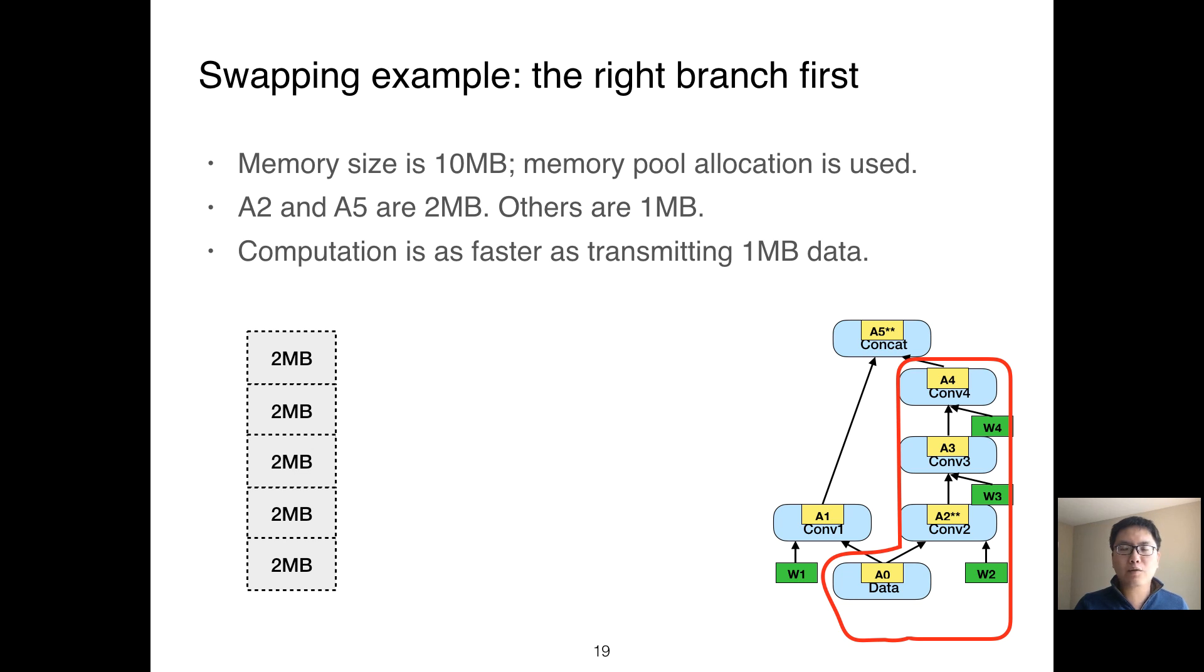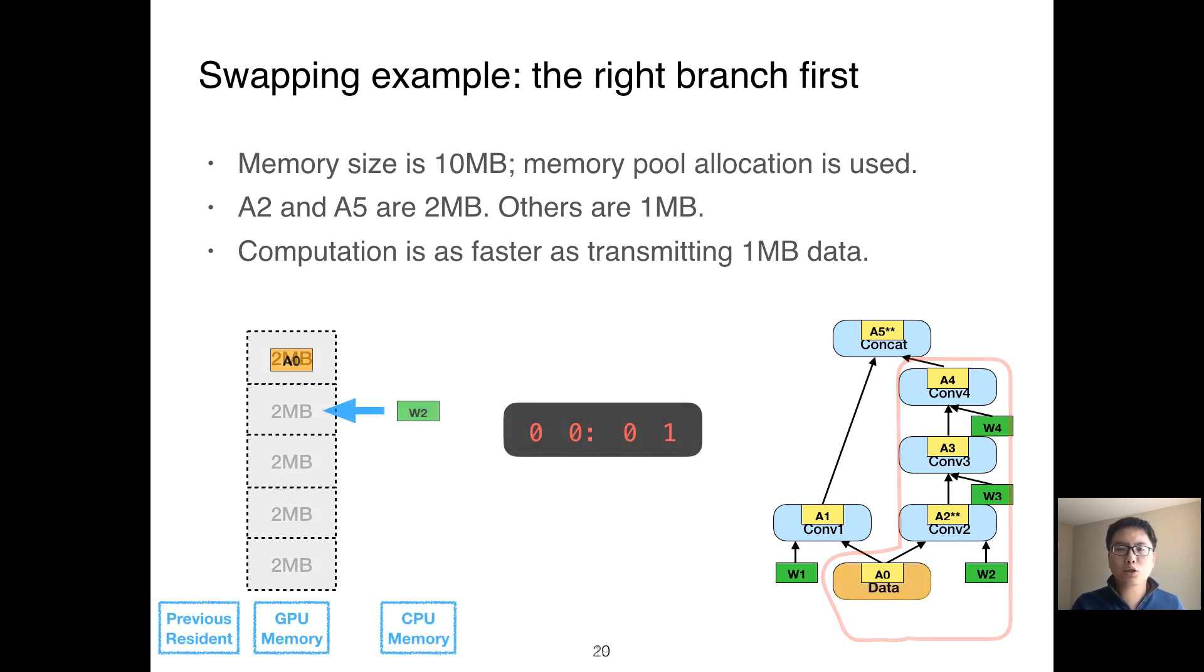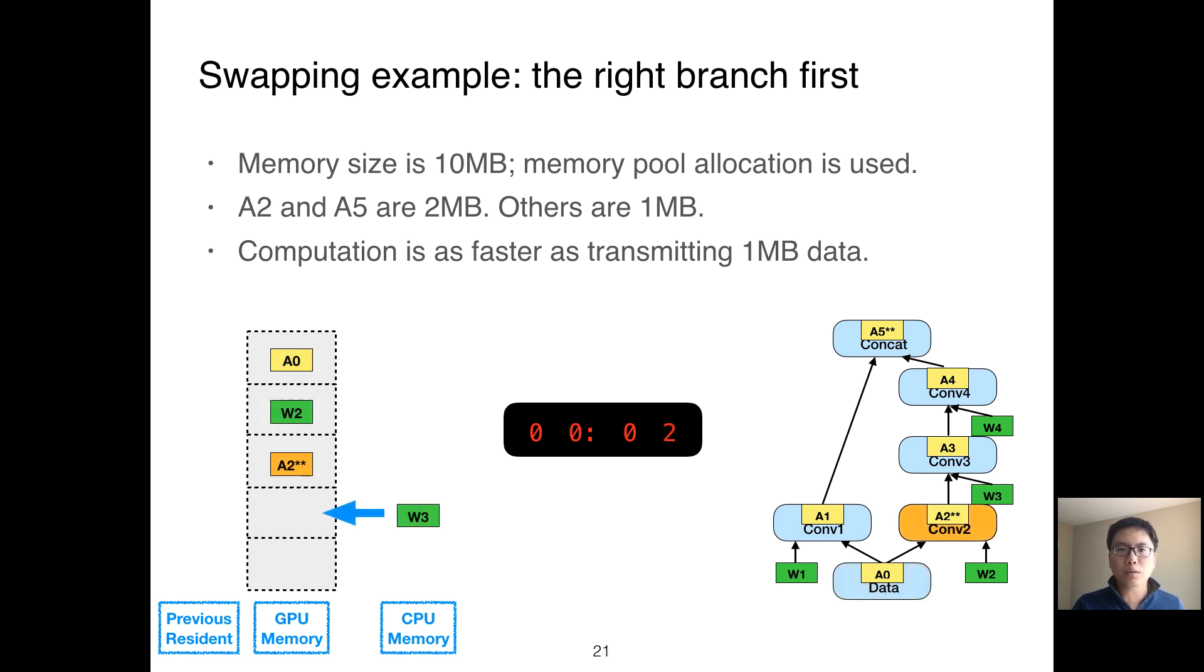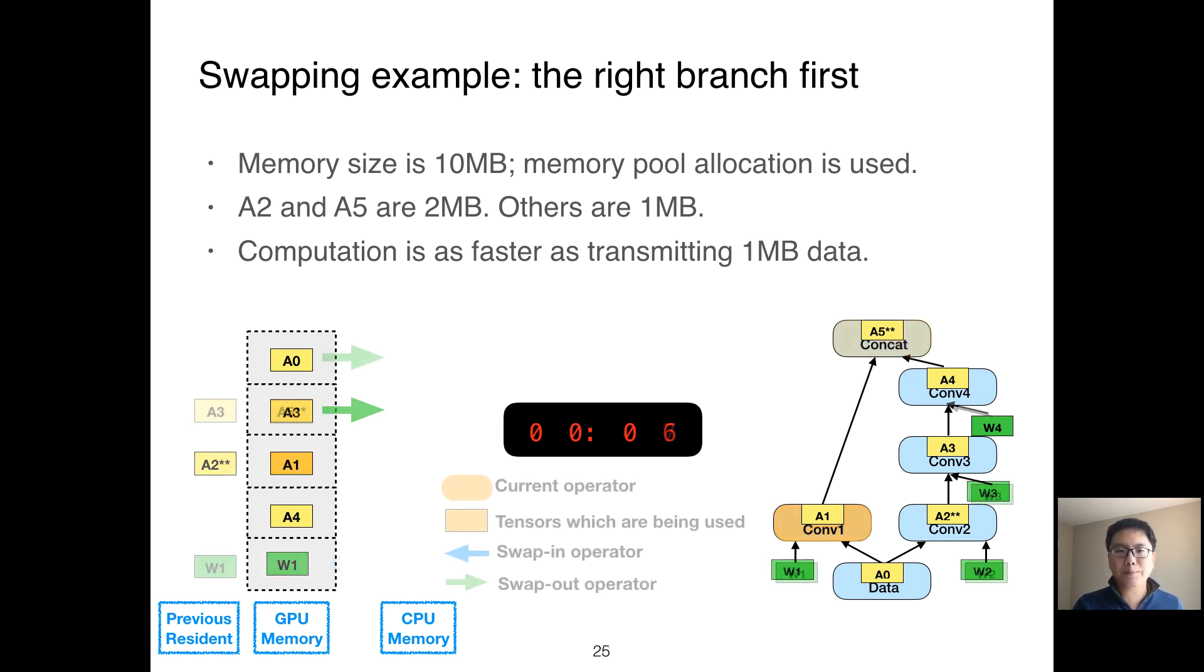What if we try a different schedule? What if we schedule the right branch first? People can check the execution by themselves. Here we directly show the execution result. With the same assumption and memory allocation, when we schedule the right branch first, no matter what kind of swapping strategy we choose, there will always be at least one swap operator that cannot be overlapped. As a result, it takes at least seven units of time to execute the dataflow graph due to the non-overlapping swap operator.